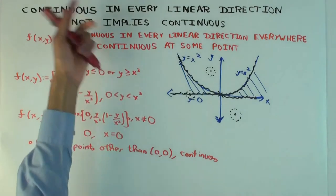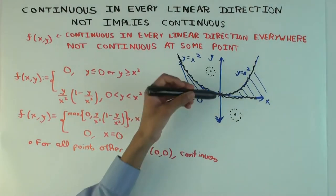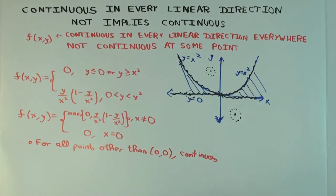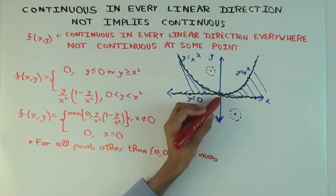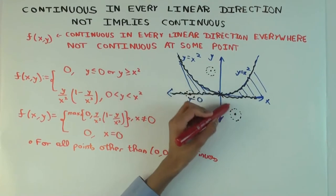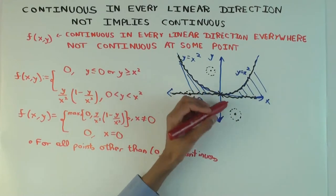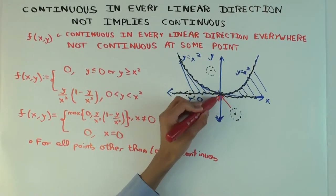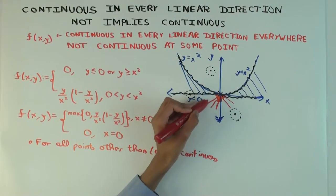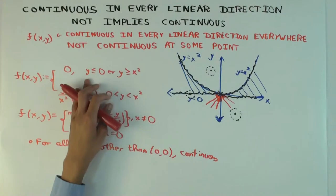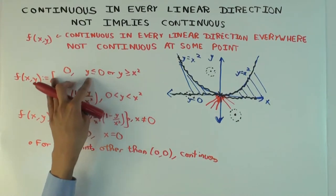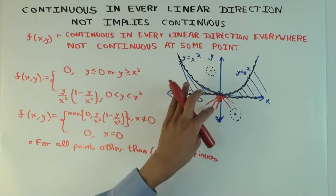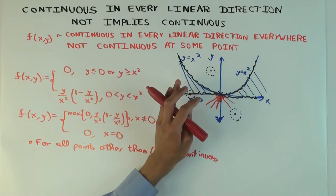Now let's concentrate on the origin. Suppose I have a straight line approaching the origin — I'll look at half lines, because any actual approach will be along a half line. It could be from somewhere below the x-axis. If it's from below, the value of the function along the line is zero everywhere, and it's also zero at the origin. So if you're approaching from lines below the origin, there's no problem — it's continuous from such lines.